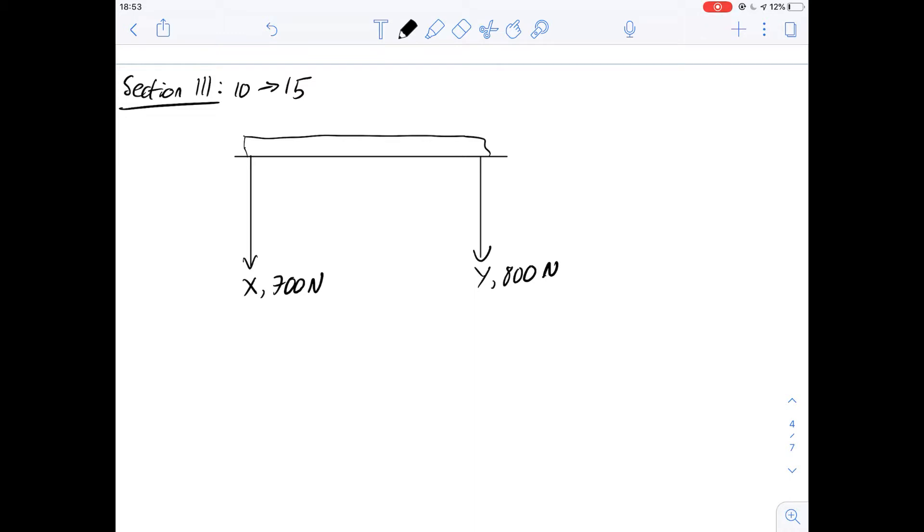Question 10 says the force exerted by the floor on the bed is what? So we know that if the bed isn't falling through the floor, the force going down will be equal to the forces going up. The forces going down in this case are 700 and 800 newtons respectively for legs x and y, and therefore acting on the floor there has to be an equal and opposite reaction. So the size of this force will just be 700 plus 800 newtons, giving us an answer of 1500 newtons, and therefore the answer for number 10 is going to be C.